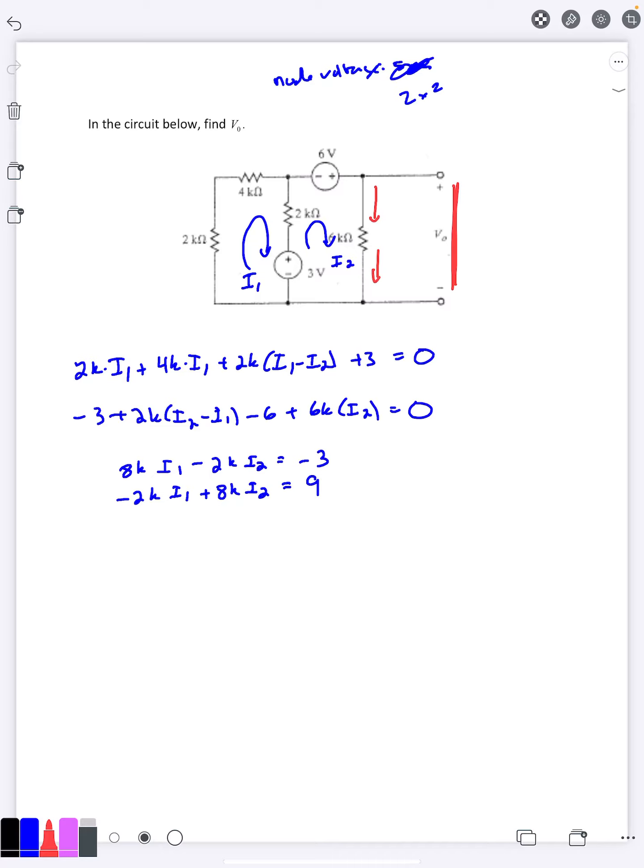So I want i2 in my answer, so I should eliminate i1 here. Go ahead and multiply that by 4, so then I would have 8k i1 minus 2k i2 equals negative 3, and then negative 8k i1 plus 32k i2 equals 36 here.